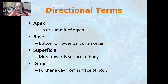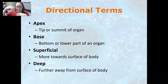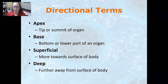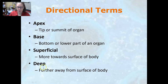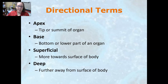The apex is the tip or summit of an organ. This is often used for the lungs because they have a pyramid shape — the tip or top of the lungs is the apex. The base is the bottom or lower part of an organ, so the base of the lungs rests on the diaphragm. Superficial is more towards the surface of the body, and deep is further away from the surface — for example, somebody might describe a pain that feels really deep in their body.